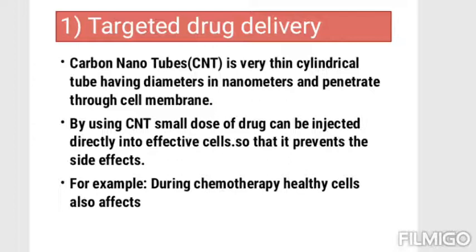The first application is targeted drug delivery. Carbon nanotubes (CNT) are very thin cylindrical tubes with diameters in the nanometer range that can penetrate cell membranes. Using CNT, small drug doses can be injected directly into affected cells. Delivering drugs in small amounts not only treats disease more effectively but also prevents the human body from the side effects generally seen with large drug doses. Large drug doses can harm healthy cells along with the affected cells — for example, during chemotherapy, healthy cells are also affected.